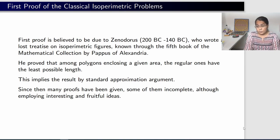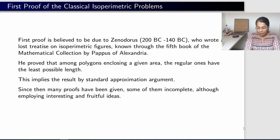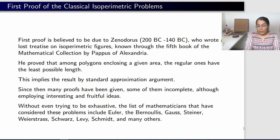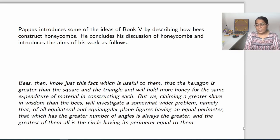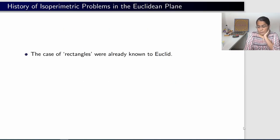Since Zenodorus around 200 BC, many proofs have been given — some of them incomplete, although they all employed interesting and fruitful ideas. Without trying to be exhaustive, the list of mathematicians who considered these problems includes Euler, the Bernoulli brothers, Gauss, Steiner, Schwarz, and Levi-Smith. They all made progress and employed interesting ideas that proved useful to later mathematicians.